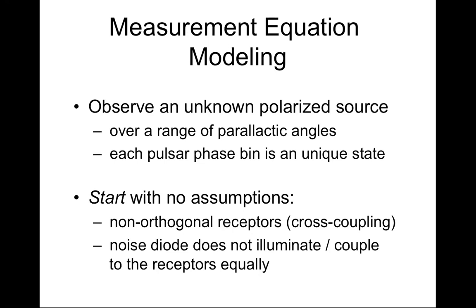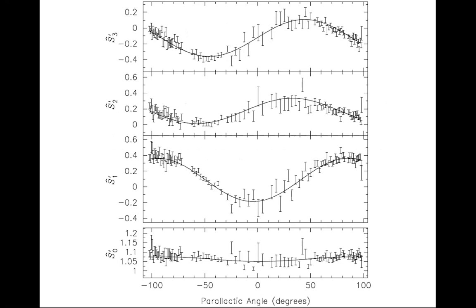Measurement equation modeling is based on the idea that even though your polarized source is unknown, if you observe it over a range of parallactic angles — the rotation of your receiver with respect to the celestial sphere — you can model those variations and get a better handle on what your instrument is doing. Pulsars are interesting because each phase bin provides a unique polarization state. This observation is of pulsar J0437-4715: its declination is minus 47 degrees and Parkes is at minus 33, so it gets about 14 degrees from transit, and the parallactic angle varied from minus 100 to plus 100 degrees — basically horizon to horizon.